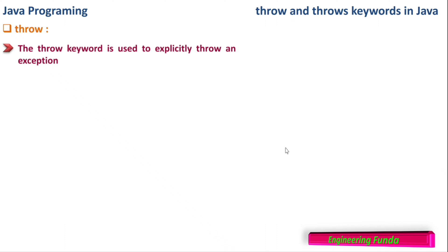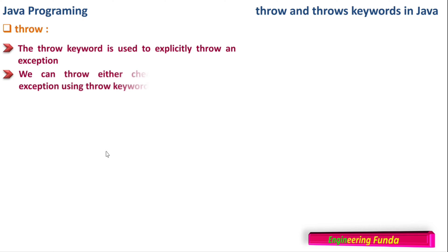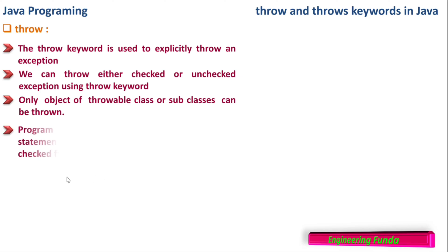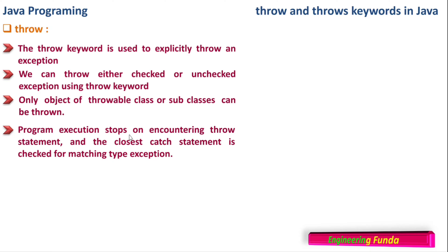The throw keyword is used to explicitly throw an exception. In a previous video, we have seen the exception class and how to handle exceptions. Here we are going to see another method of handling exceptions using throw. We can throw either checked or unchecked exceptions. Only objects of the throwable class or a subclass can be thrown.